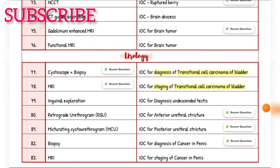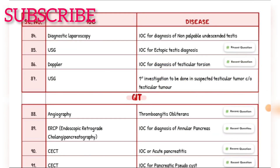Investigation of choice for diagnosis of cancer of penis — biopsy. Investigation of choice for staging of cancer of penis — MRI. Investigation of choice for diagnosis of non-palpable undescended testis — diagnostic laparoscopy. Investigation of choice for ectopic testis — ultrasound (recent question). Investigation of choice for diagnosis of testicular torsion — doppler (recent question). First investigation in suspected testicular tumor — ultrasound.